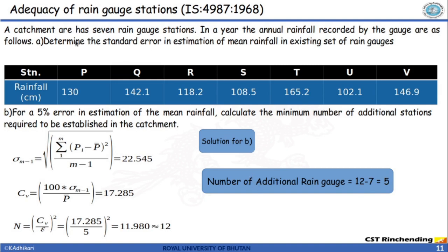For part A, to determine the standard error in estimation of mean precipitation with the existing gauges, the coefficient of variation remains the same. You substitute the value of n equal to 7, and E is unknown. From the expression you can then calculate the existing error.